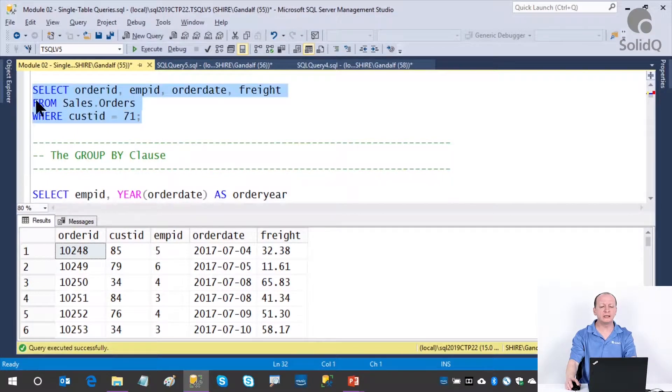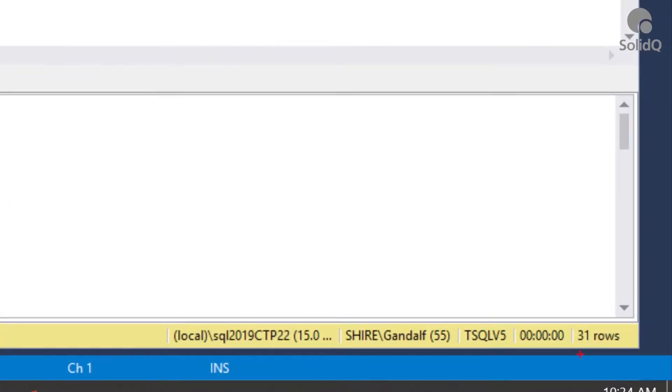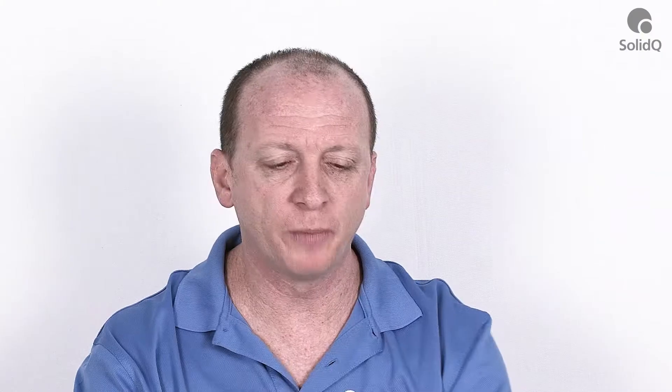Let's go ahead and apply this in our case. Notice how we're querying only orders where the customer ID is equal to 71, and out of 830 rows that we have in the table, observe that we got 31 rows back. So apparently customer 71 placed 31 orders.